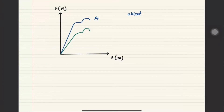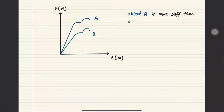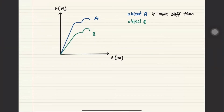Let's say object A is the steep graph and object B is the less steep graph. Object A is more stiff than object B. If I talk about strength, I need to see where it breaks — object A breaks at a higher force, so it is also stronger. The difference in steepness tells you about stiffness and strength. A brittle object sits on the graph as a straight line that goes straight to breaking, with no plastic region — this indicates the object is brittle.